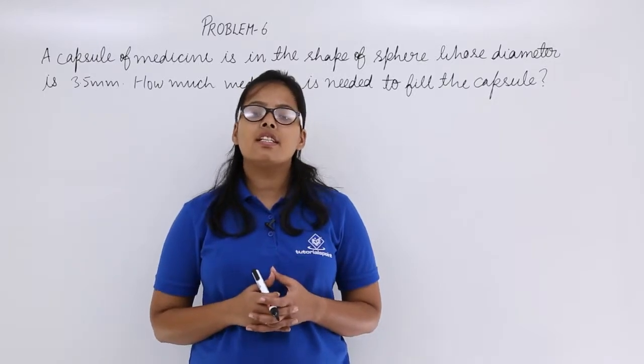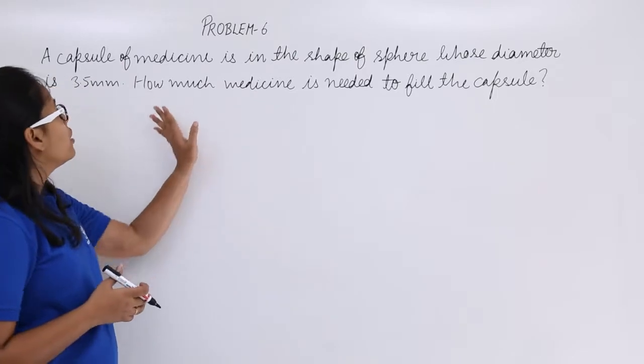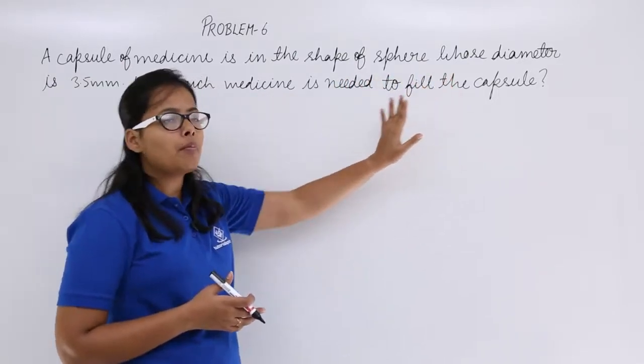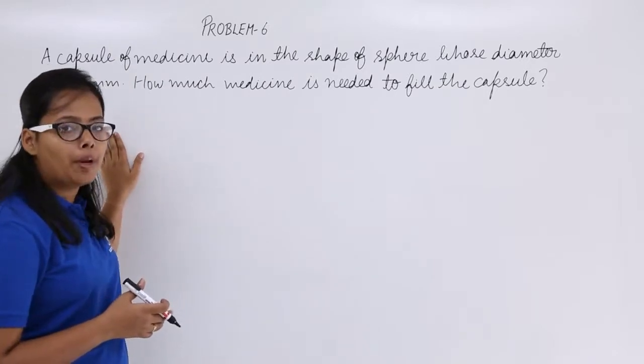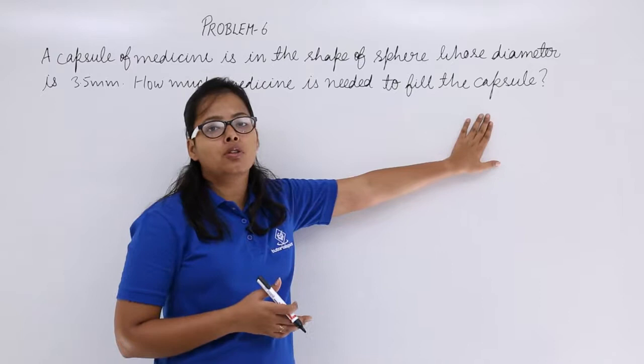Hello guys, let's discuss this problem here which says a capsule of medicine is in the shape of a sphere whose diameter is 3.5 mm. How much medicine is needed to fill the capsule?